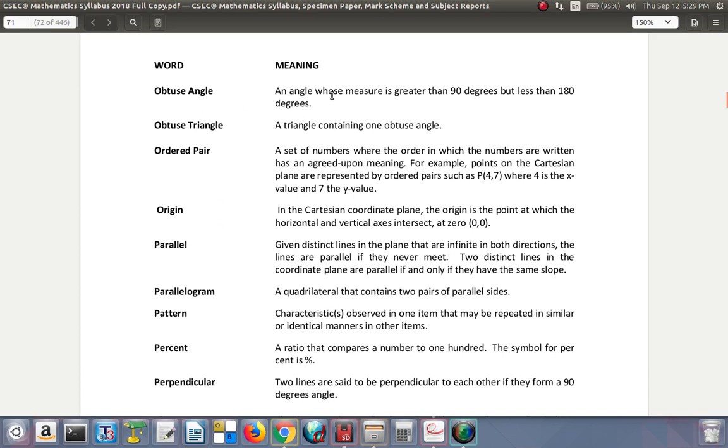Obtuse angle: an angle whose measure is greater than 90 but less than 180 degrees. Obtuse triangle: a triangle containing one obtuse angle.